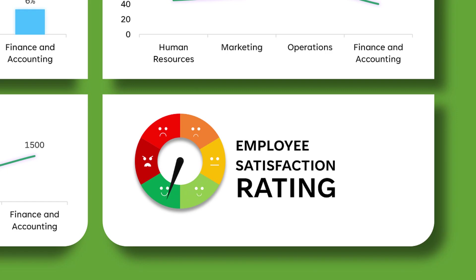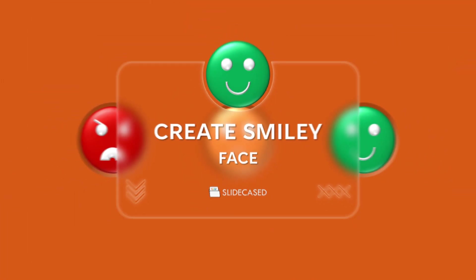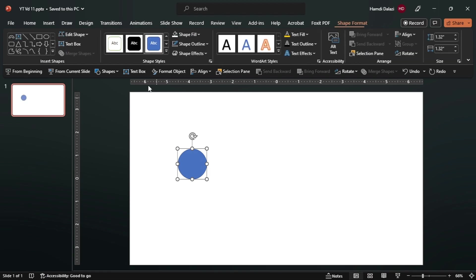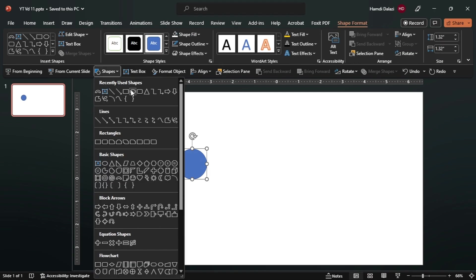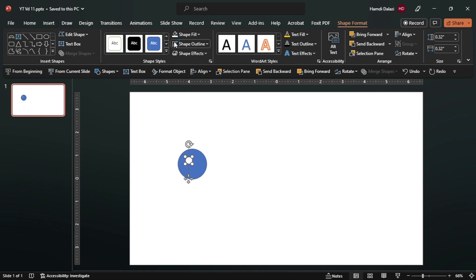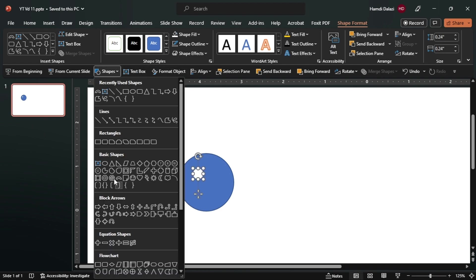So the first step is to create smiley faces. Let's insert a circle, then insert another circle to make it smaller. Let's drag this to this point - you can make your whites a skill. Okay, let's insert a block arc.